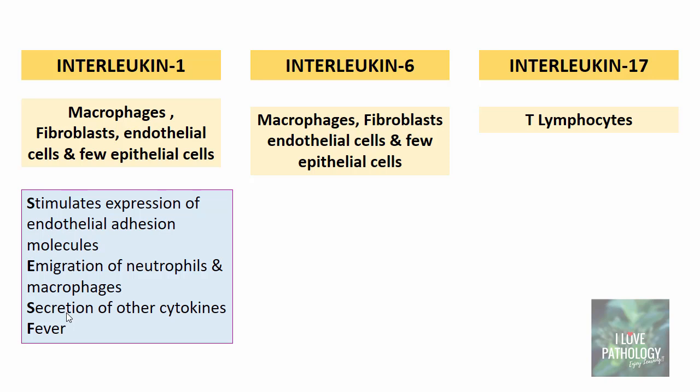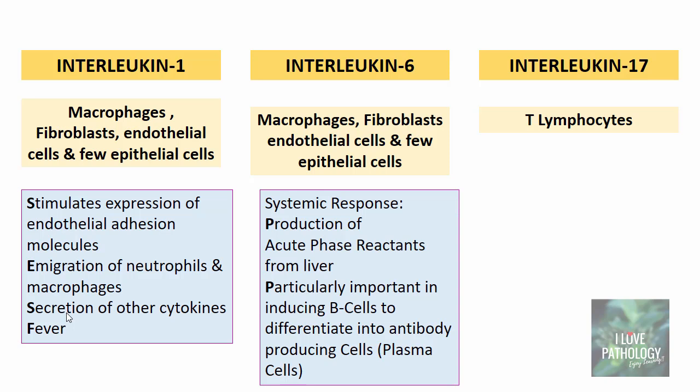Interleukin 1 is also important in the most important systemic effect of inflammation: fever. Through its endocrine effect it affects the activity of the hypothalamus, which is the thermoregulatory center, causing rise in body temperature manifested as fever. Interleukin 1 is referred to as an endogenous pyrogen, along with interleukin 6. Interleukin 6 has almost similar functions to IL-1 but is predominantly responsible for the systemic response of inflammation, which includes fever and production of acute phase reactants from the liver. The most important acute phase reactant is C-reactive protein, which is a marker for inflammation and also important in inducing B cells to differentiate into antibody-producing plasma cells.